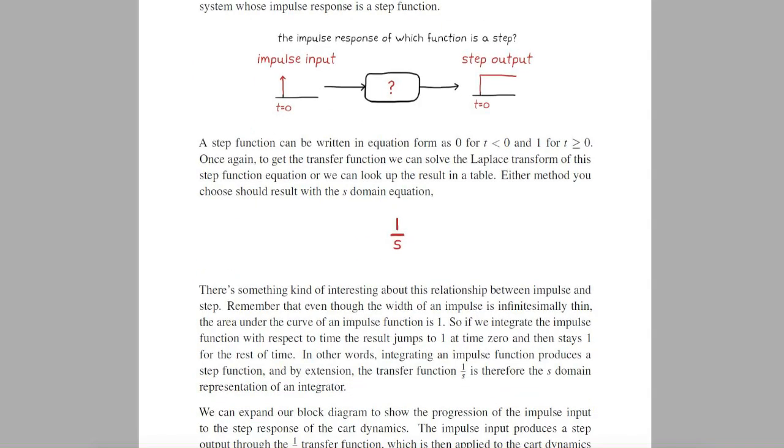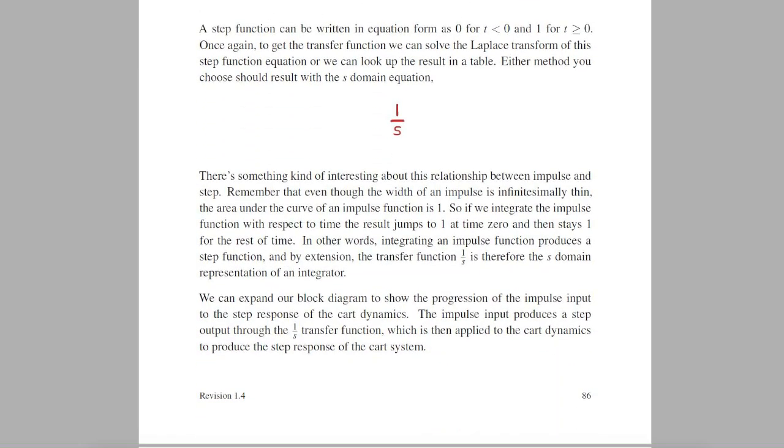Now 1 over S happens to be the S domain representation of an integrator. This makes sense if you think about when you integrate an impulse in the time domain, you get a step. It jumps to 1 immediately because the area under the impulse is 1, and then just stays there for the rest of time.